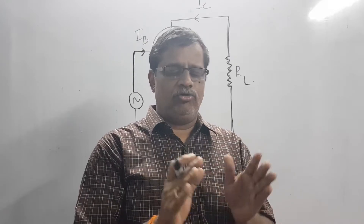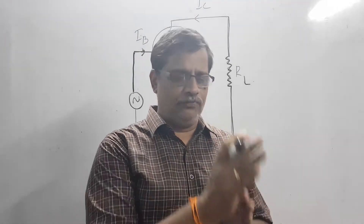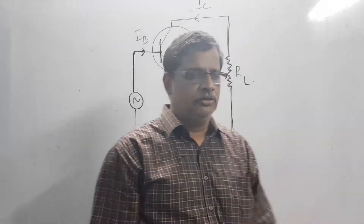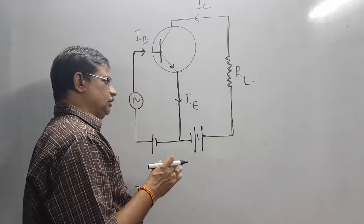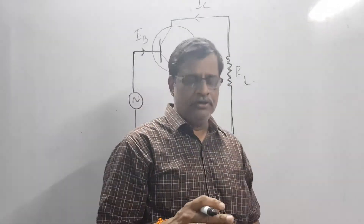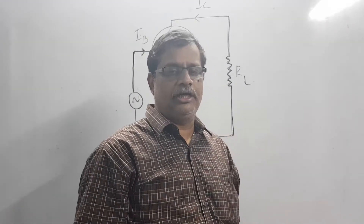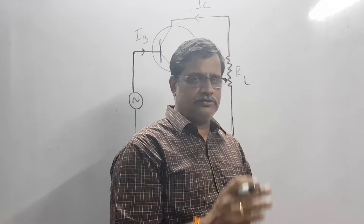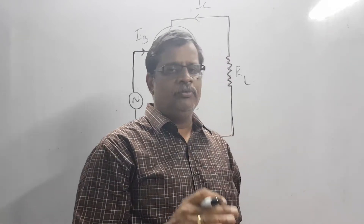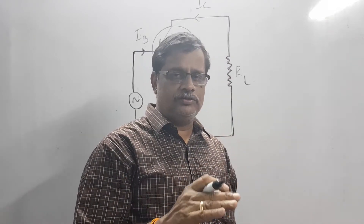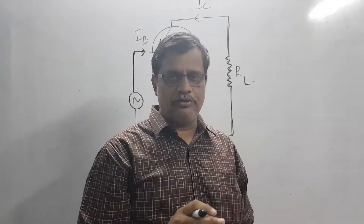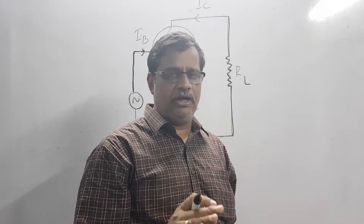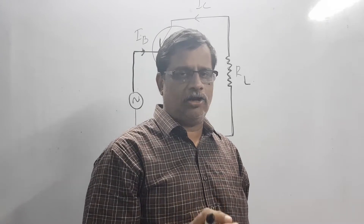One of the PN junctions is forward biased and the other is reverse biased. When you forward bias a PN junction, its resistance decreases; when you reverse bias it, the resistance increases. So in a transistor, you are transferring a signal from a region of low resistance to a region of high resistance — that is what the transistor does, and the name itself means 'transfer across a resistor.'